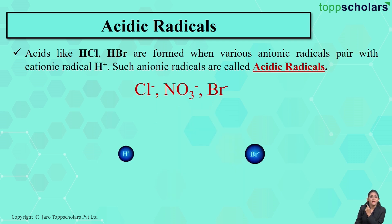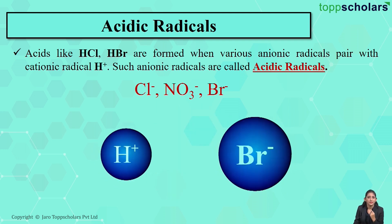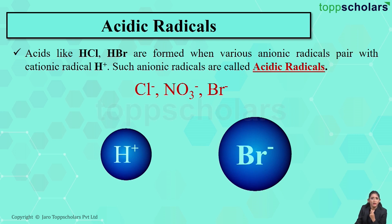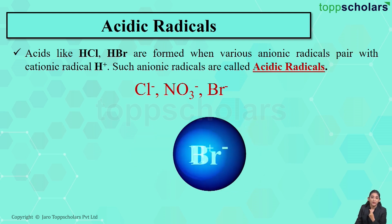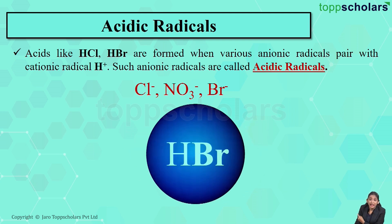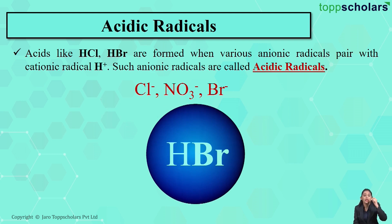Now let's move on to Br⁻. Again it is an anion — negatively charged. Br⁻ pairs up and combines with the H⁺ radical, and what does it form? HBr — hydrobromic acid. Again, here we get an acid.